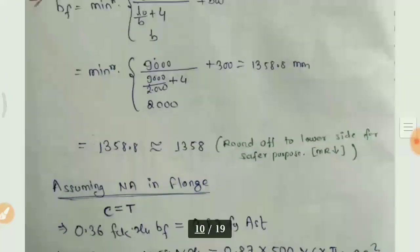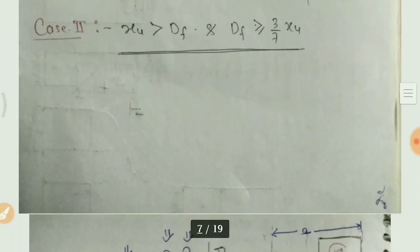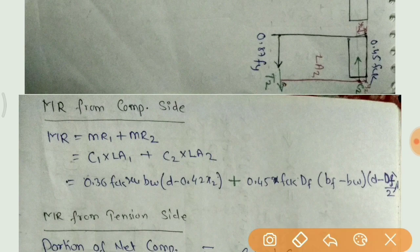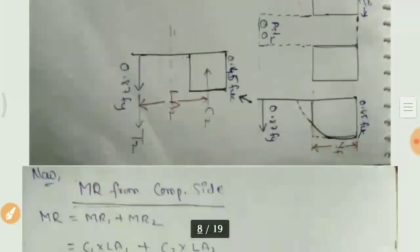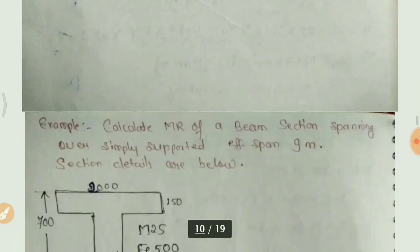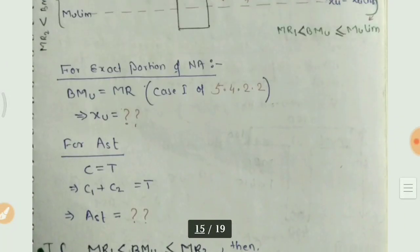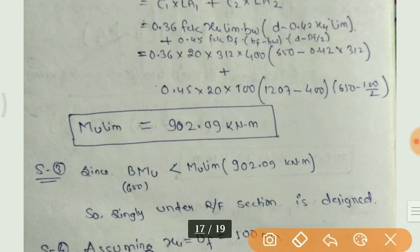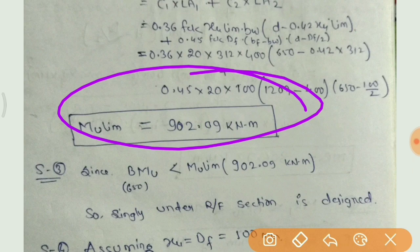Mu limit = 902.09 kNm आया। BMU = 650 kNm जो mu limit से less है — so singly reinforced section design करेंगे।